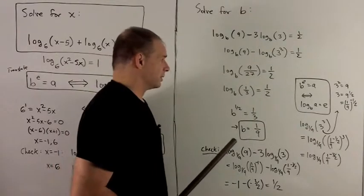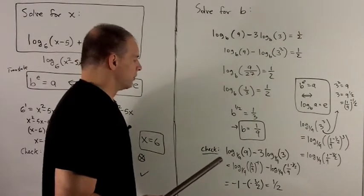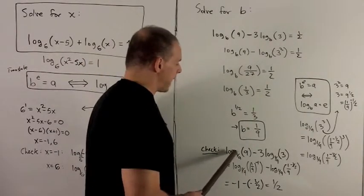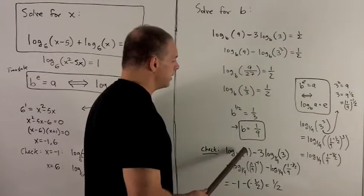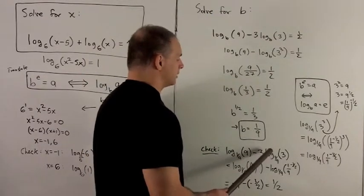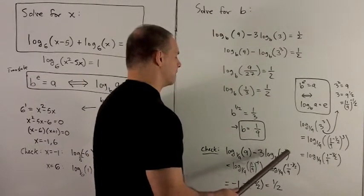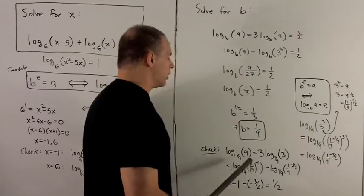Let's check this. Going to the original equation, I've log base 1/9 of 9 minus 3 log base 1/9 of 3. For the first part,